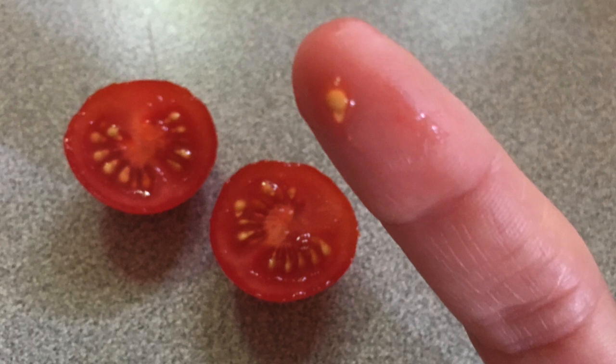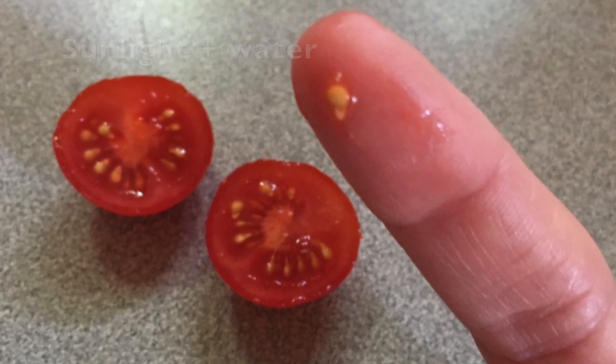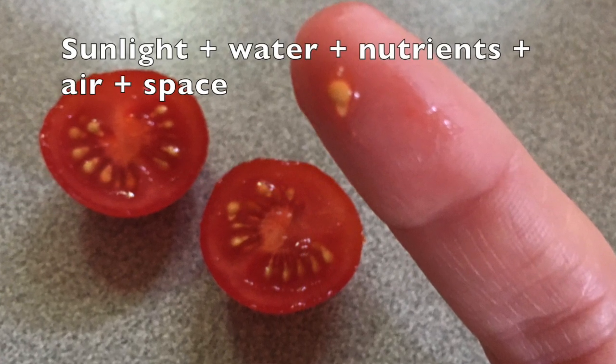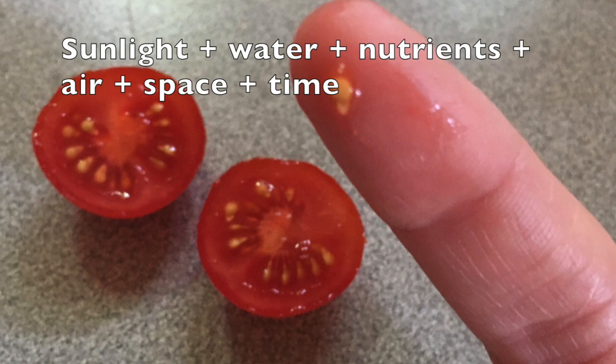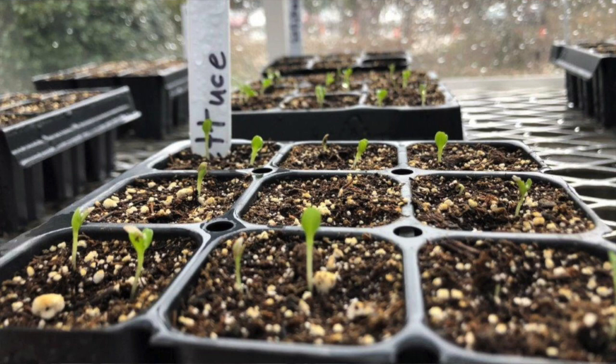So we start with a seed. We add sunlight, water, nutrients, air, room to grow, and some time. The seed grows and germinates and produces a little sprout.